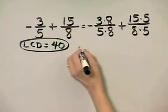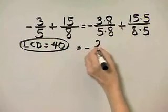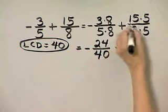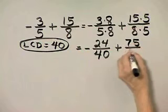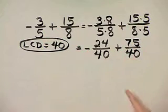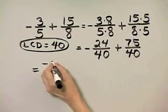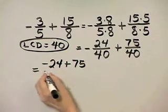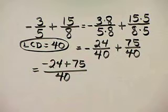Now, let's see what we have. We have negative 3 times 8 is 24 over 40, plus 15 times 5 is 75 over 40. What have we accomplished? The denominators are now the same. So that is now equal to negative 24 plus 75, all over that common denominator of 40.